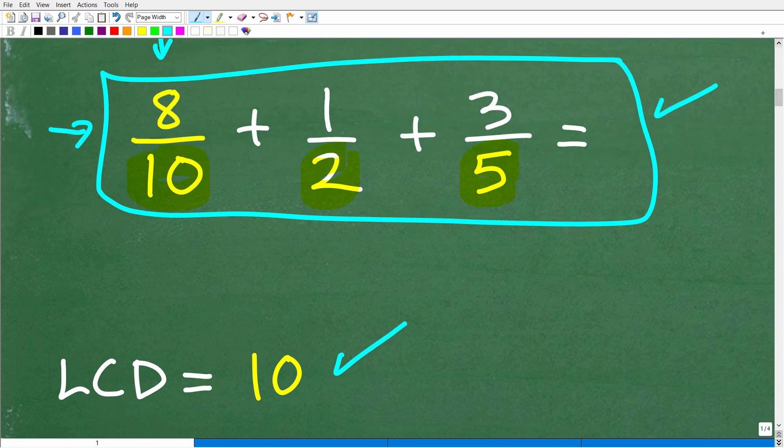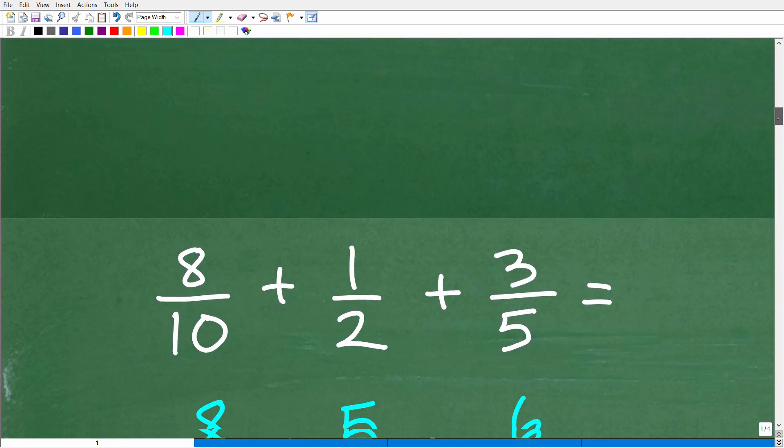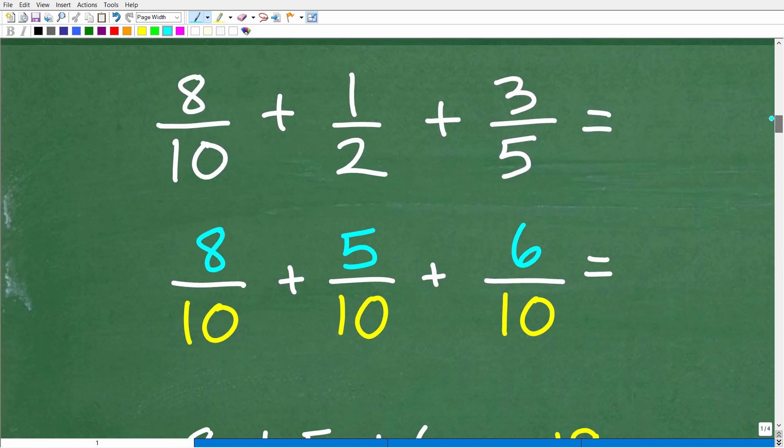Alright. But what do we need to do with that LCD? Well, this fraction already has a denominator of 10. So we're going to have to rewrite 1 half and 3 fifths such that the denominators of these fractions are 10. Okay. Alright. So this is not that difficult. Again, we're talking about basic math here. So let's go ahead and do this right now.